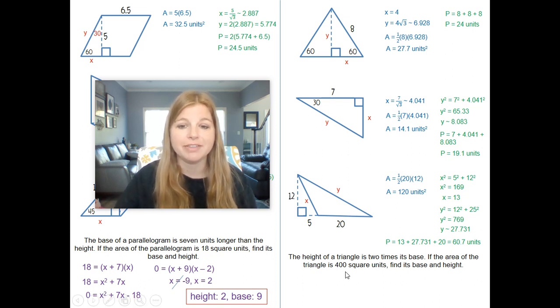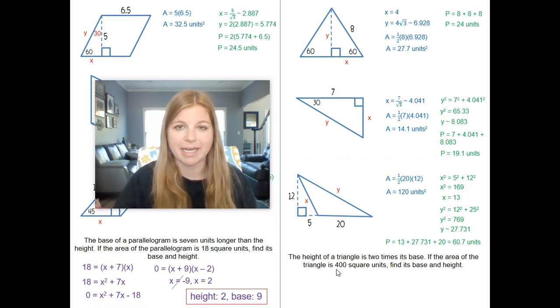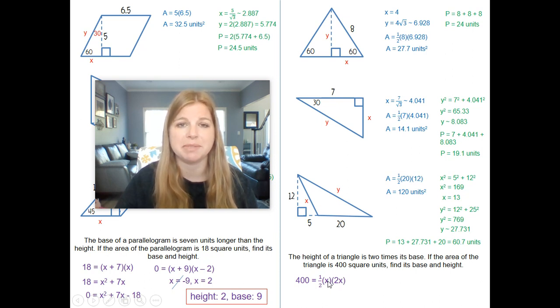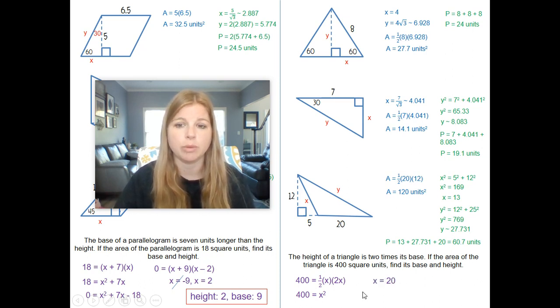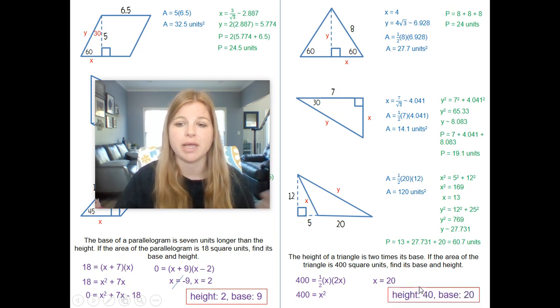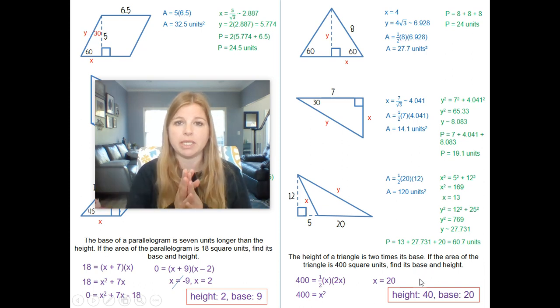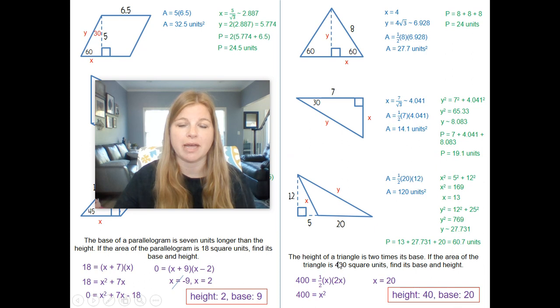Last problem. The height of a triangle is two times its base. If the area of the triangle is 400 square units, find its base and height. So if the area is 400, I plug in my 400 for a, one half, it says the height of a triangle is two times its base. So here's the base x. And then here's the height, because it's two times the base. Now think about what ends up happening here. Half of two is one. So this is really just saying 400 equals x squared. Square root of 400 is 20. So that would mean my 20 is my base. The height is two times the base. So the height would be 40. And it makes sense. If I multiply 40 and 20 together, I get 800, take half of it, it brings me to that 400.